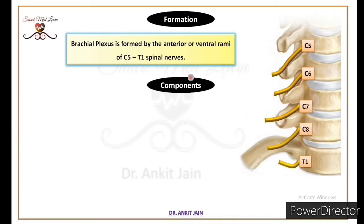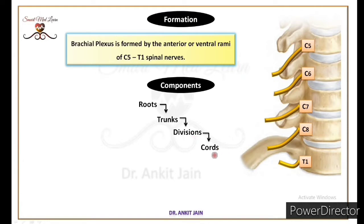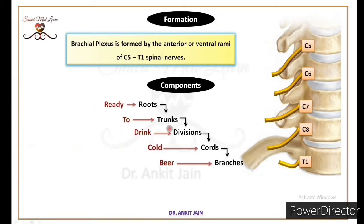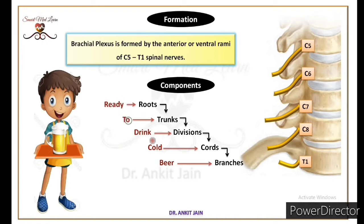Now we talk about the components of the brachial plexus. Brachial plexus consists of roots. Roots say trunk banega, trunk divide ho kar divisions banayega, and divisions say cords ka formation hoga. Aur cords say branches nikalengi jo ki upper limb ki muscles aur skin ko innervate karengi. In components ko yaad rakhne ke liye hamari trick hai: Ready To Drink Cold Beer. Yahan par R indicates the roots, T indicates the trunk, D indicates the divisions, C represents the cords, and B of beer indicates the branches.